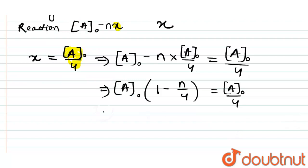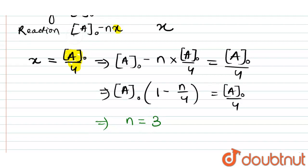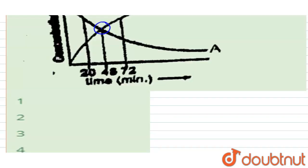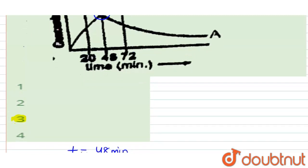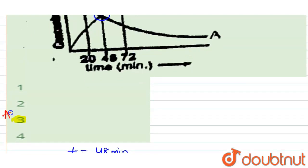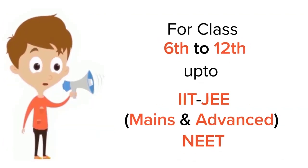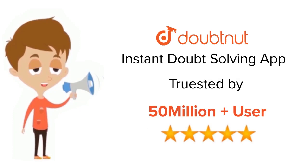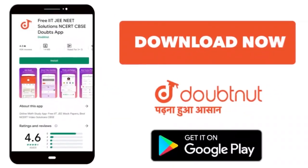By solving this, we will get n is equal to 3. So our answer will be option 3, that is the value of n is 3. Option 3 is our answer. Thank you. For class 6 to 12, IIT-JEE and NEET level, trusted by more than 5 crore students, download Doubtnut app today.